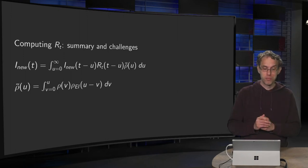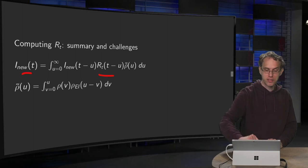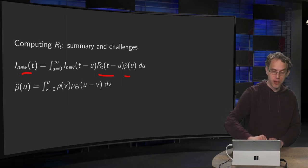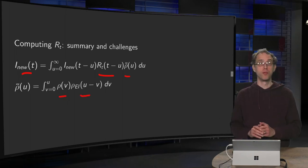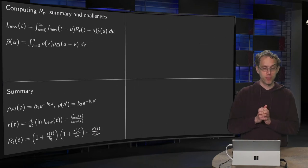How do we compute R(t)? Well, we had our I_new and our R(t), and the problem is R(t) was inside an integral with some rho tilde of u, and rho tilde was a convolution of the two probability densities.